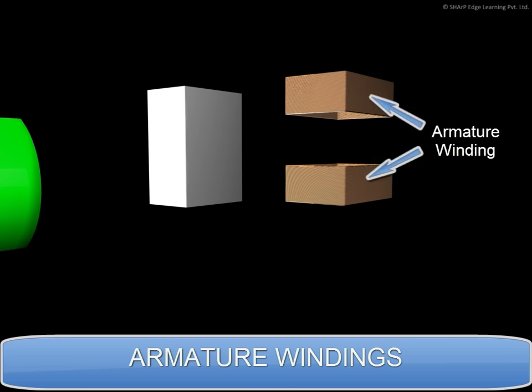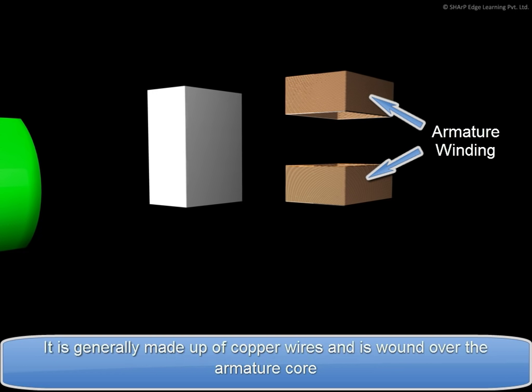Next is Armature Winding. It is generally made up of copper wires and is wound over the armature core.